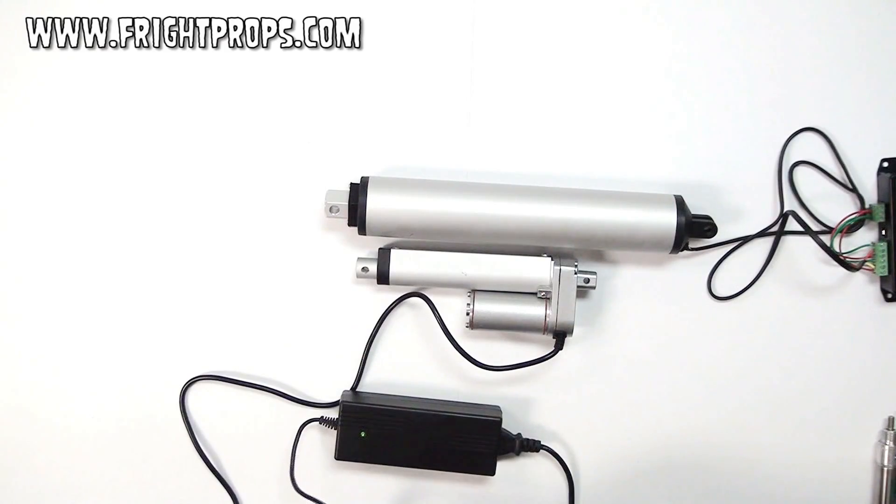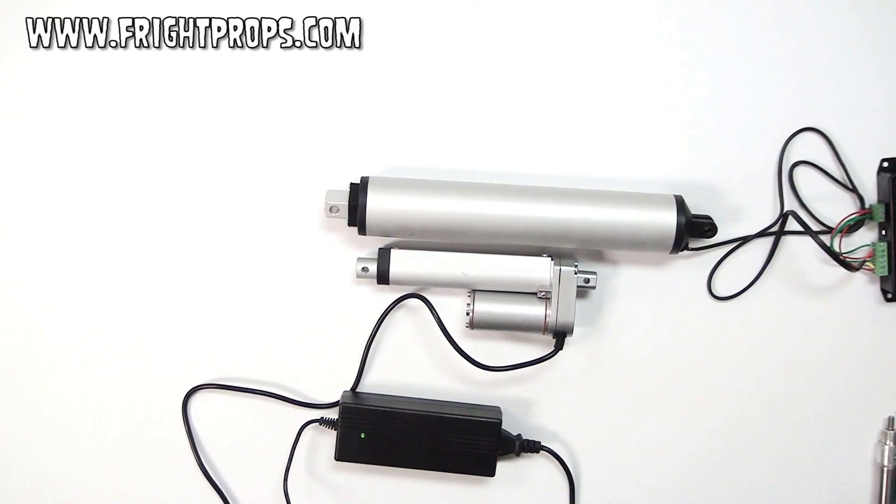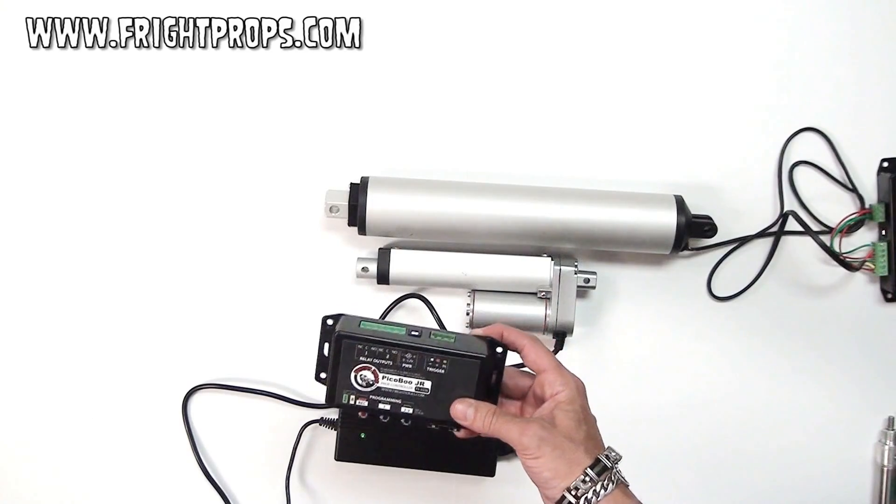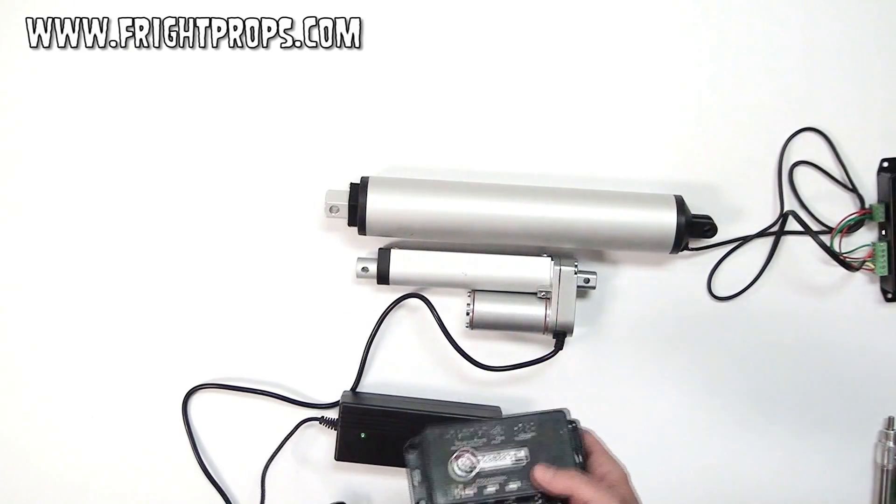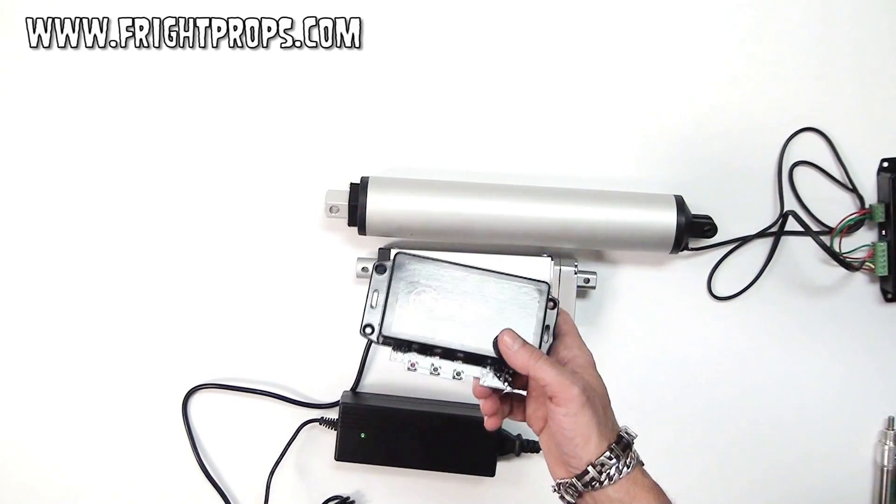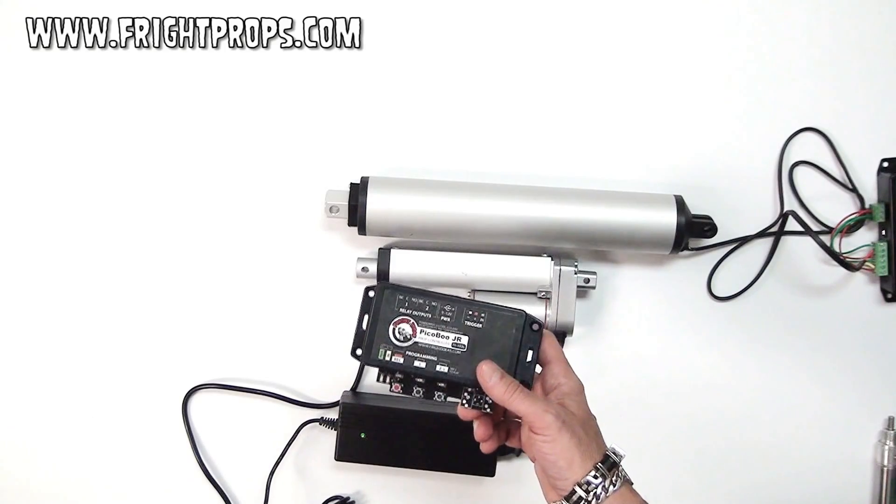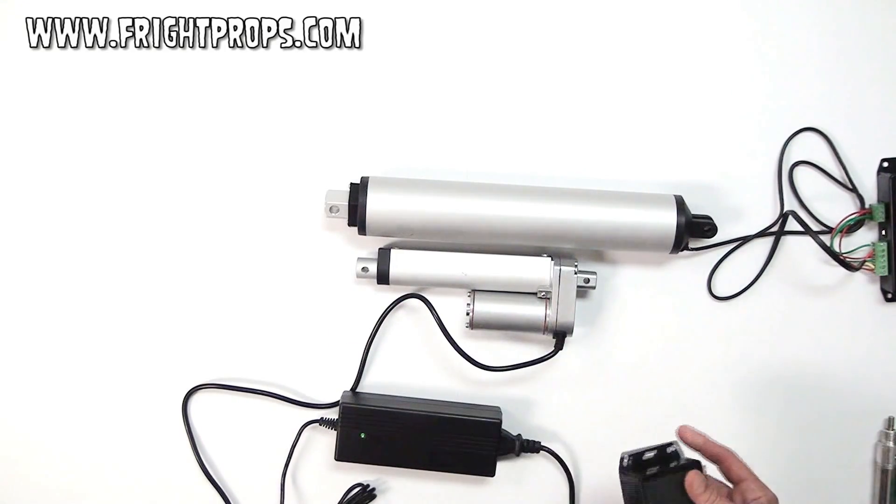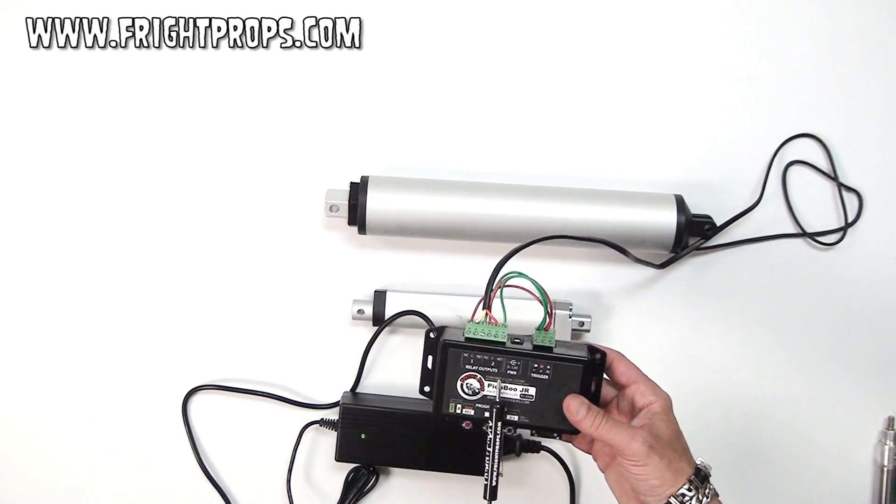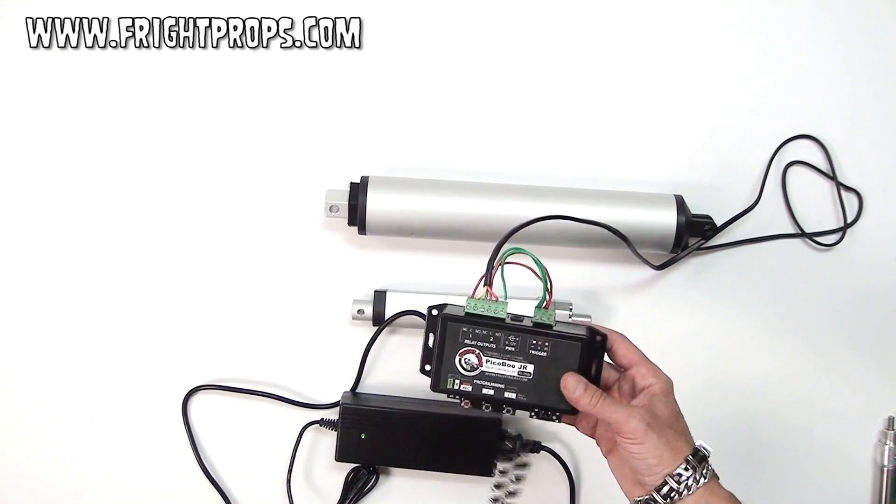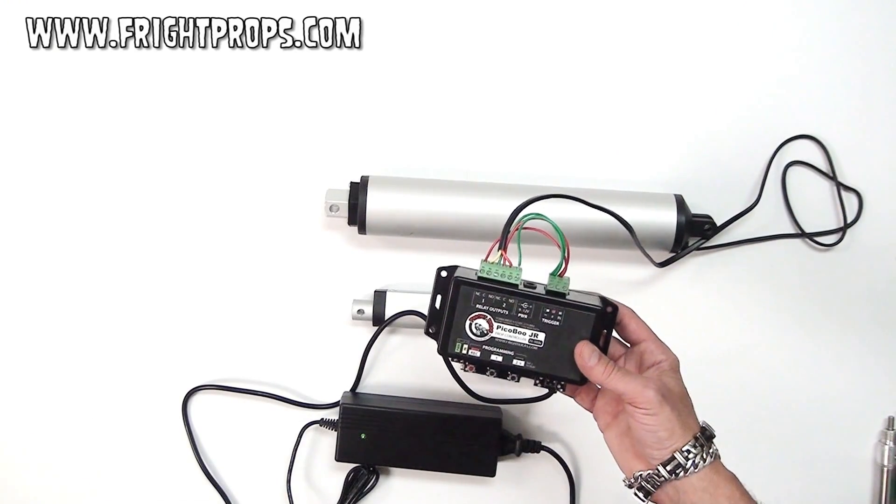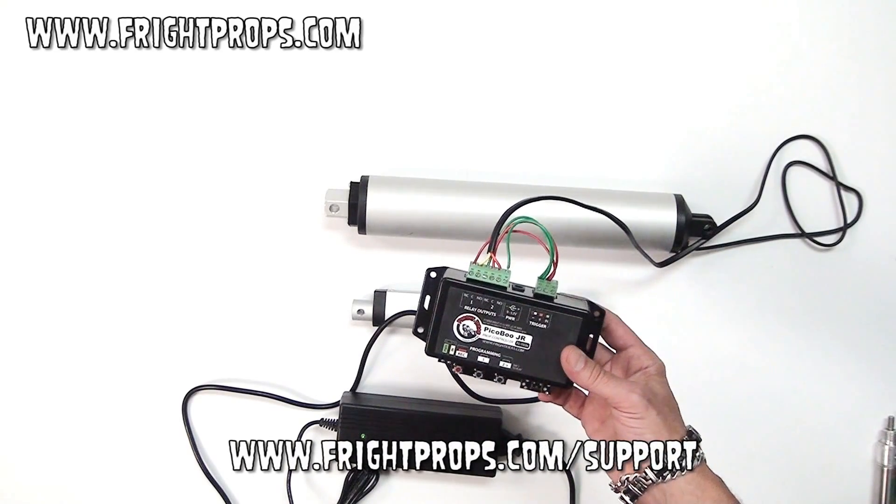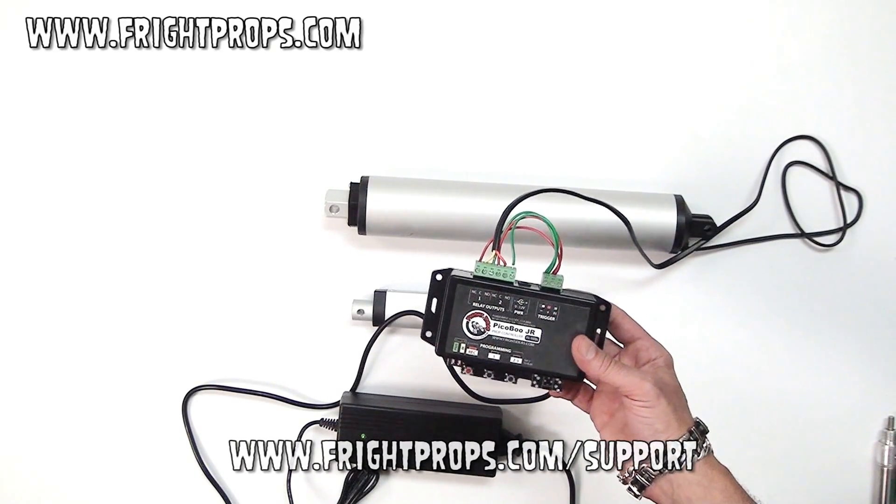So we recommend using one of our peekaboo controllers, such as this. You can use a peekaboo with audio capabilities and have audio play when the actuator is moving, or use a simple peekaboo junior like this. I've pre-wired this peekaboo junior to use with our actuators. You can find easy to follow wiring diagrams on our website in our support and training center at frightprops.com/support.